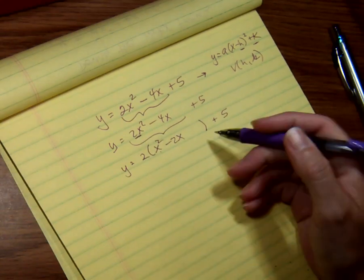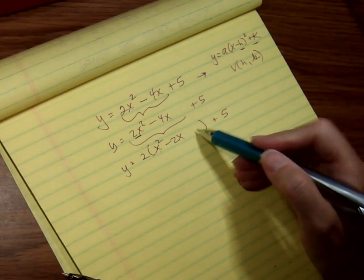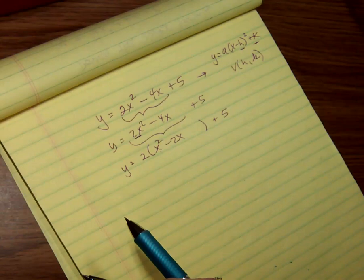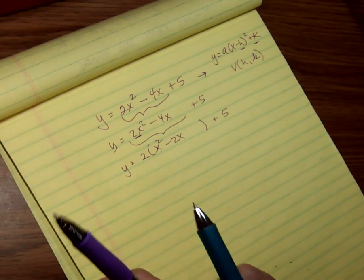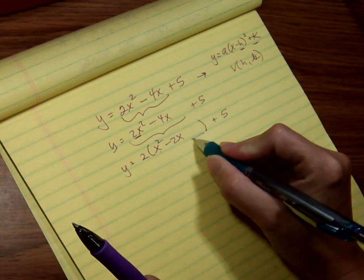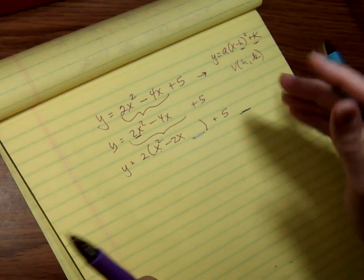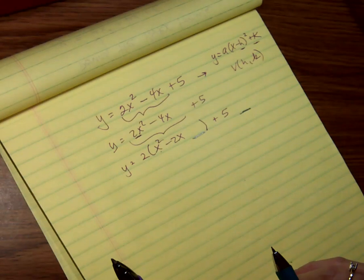Now I'm about to alter this side. So the only thing I can do to alter it is multiply by 1 or add 0. So multiplying by 1 is not going to be very helpful here. So what I'm going to do is add a number here and subtract the value of that number here so that I'm effectively adding 0.